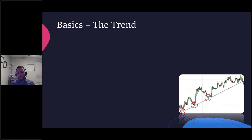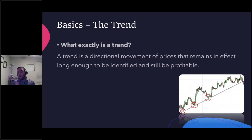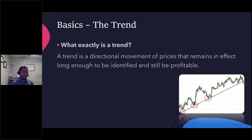One of those theorems was that prices trend — prices are not random in the market. So what exactly is a trend? A trend is a directional movement of prices that remains in effect long enough to be identified and still be profitable. What this means is that prices tend to go in one direction or the other for elongated periods of time, independent of timeframe. Technical analysis is very fractal in its nature, meaning that we can be looking at a daily chart with certain trends, but we can reduce it to a weekly chart, an hour chart, a minute chart, and see smaller trends within them.